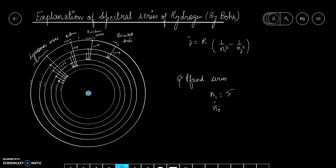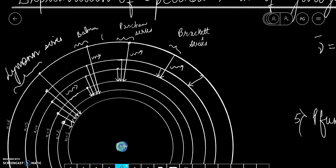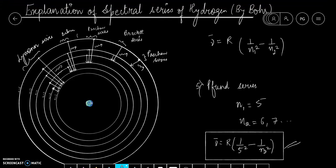In the Pfund series, electrons are jumping to fifth orbit from higher orbits, that is 6, 7 and so on. In these transitions, the photons that are emitted belong to Pfund series and the wave number of those photons is given by this formula. This series also belongs to the infrared region of the spectrum.